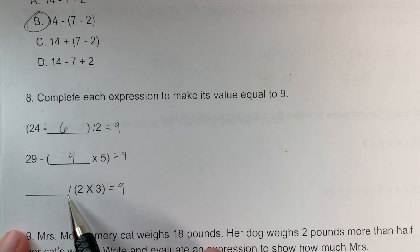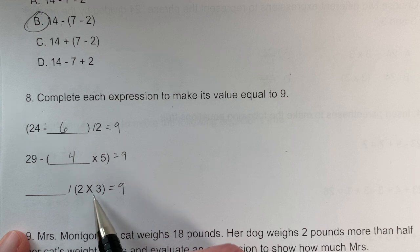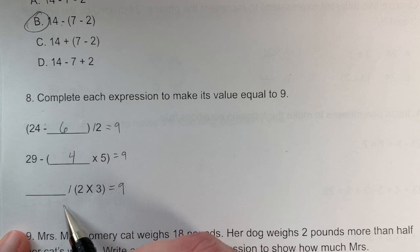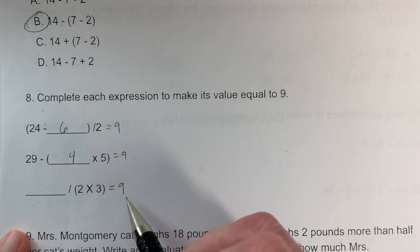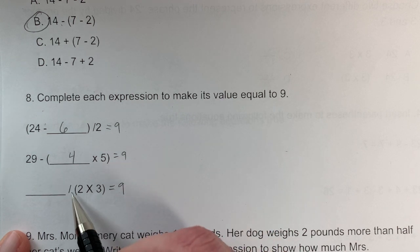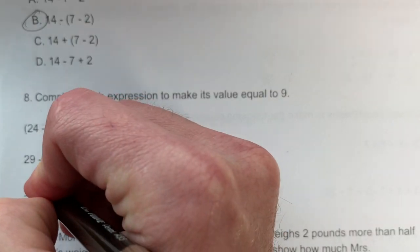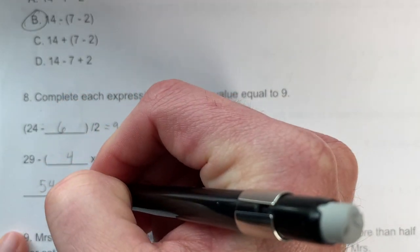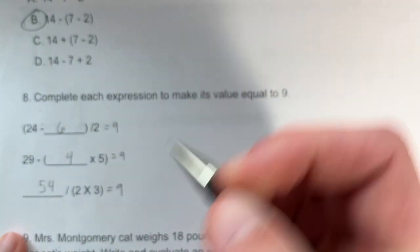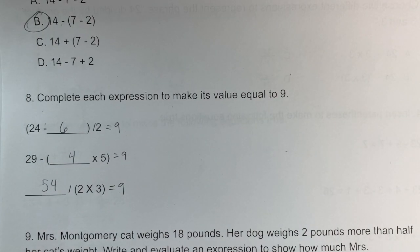Problem 8c: We have 2 × 3 = 6, so the answer divided by 6 equals 9. Using inverse operations: instead of dividing by 6, multiply 9 × 6 = 54. So 54 ÷ 6 = 9. The answer is 54.